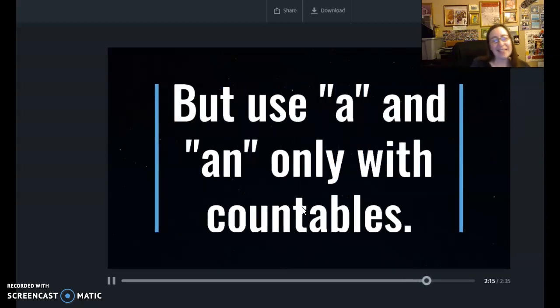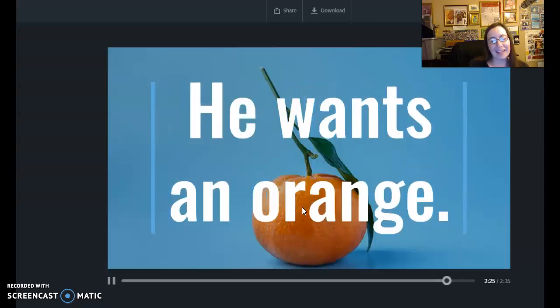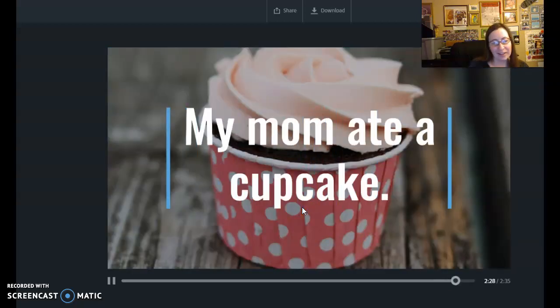You use a and an only with countables. So for example, you can only say I want a dog or I want an orange. My mom ate a cupcake.